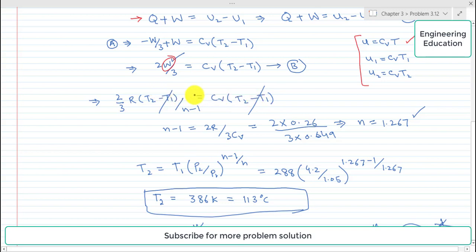And we will get n minus 1 is equal to 2R by 3Cv. The value of R is calculated, also the value of Cv is given.